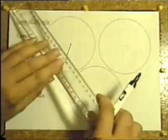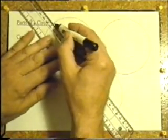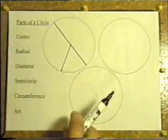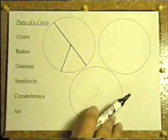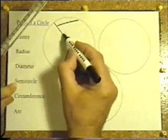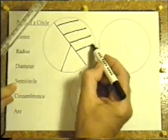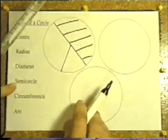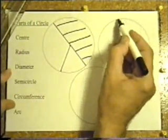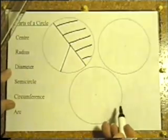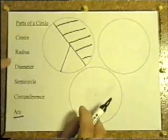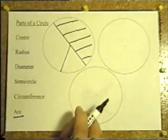The diameter of the circle — that's any line passing through the centre. Semi-circle would be half of the circle, so if you use the diameter, you've got a semi-circle. Circumference — that's all the way around the outside. I usually go through centre, radius, diameter, semi-circle, circumference and everybody knows what I'm talking about.